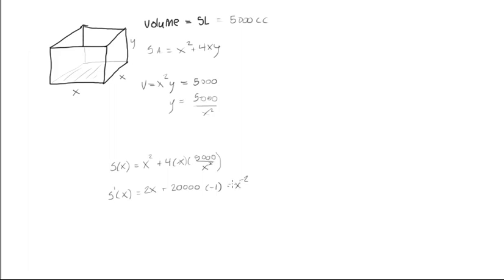And remember this is an optimization problem, so we want to set the derivative equal to zero because we're trying to find the minimum amount of surface area here. So let's just clean this up a little bit. Because it's equal to zero, we can bring this to that side to be positive 20,000, so what we're going to get is 2x is equal to 20,000 over x squared.